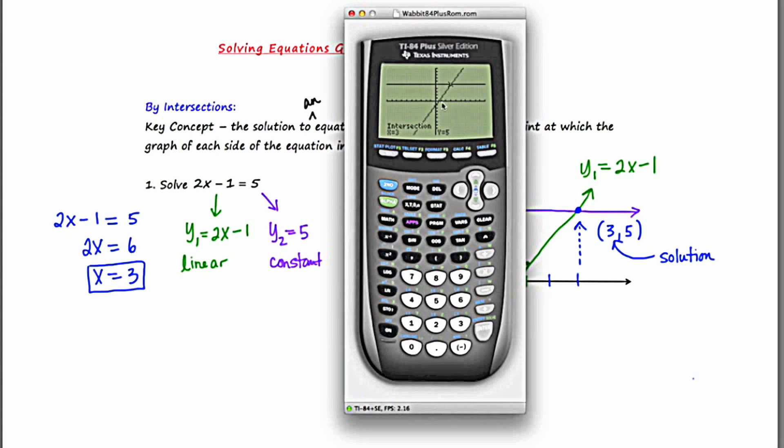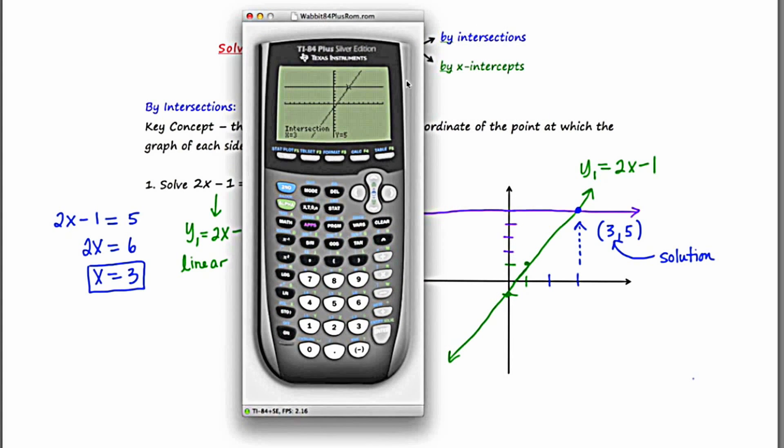And after you've pressed enter three times, you're going to see the word intersection, and it gives you the ordered pair, three, five. And again, while they give us a pair, we only really want to focus on the x, x equals three, thus confirming our answer that we got when we did it by hand.